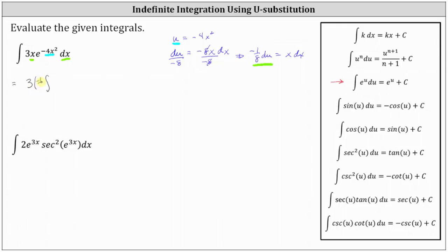We factor out the negative 1/8, giving us du. And e to the power of negative 4x squared is now e to the u. Simplifying, we have negative 3/8 times the integral of e to the u du, which equals negative 3/8 times e to the u plus c.